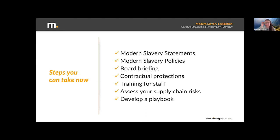The next item on the list is contractual protection. We're seeing more and more of these come up in the construction industry. It's worth hitting control-F and searching for 'modern slavery' on any new contracts that come across your desk. It's also worth considering whether you'd like to include provisions in your own standard terms agreements, to explain to your business partners what your expectations are and pass some obligations on to them to monitor what's going on in the supply chain. Then there's training for staff — that's one of the topics you need to mention in your modern slavery statements. The more people in your organisation who are alert to modern slavery issues, the more likely it is that you'll pick up those red flags and send them up the line.